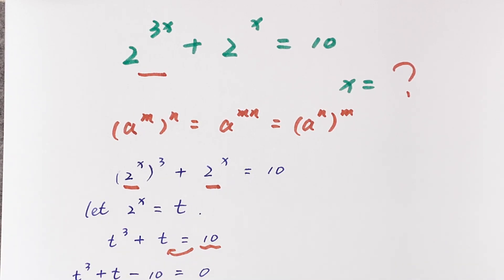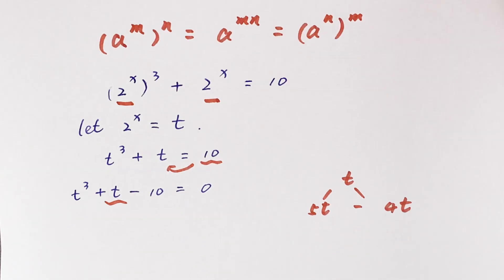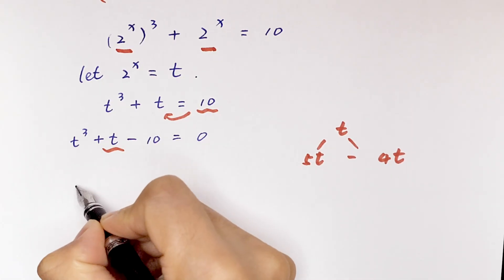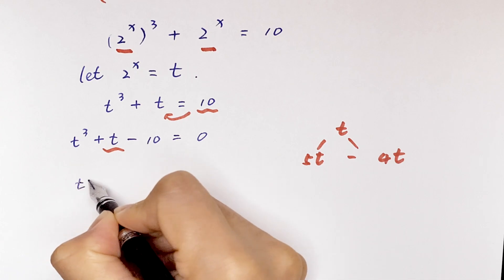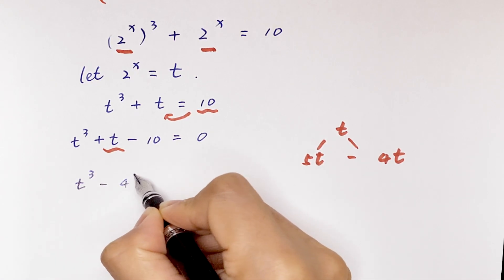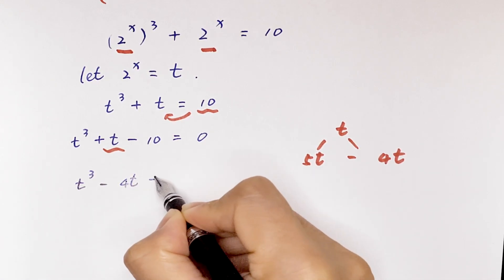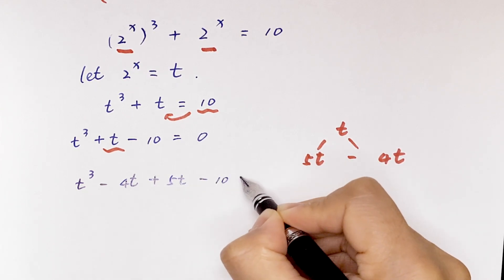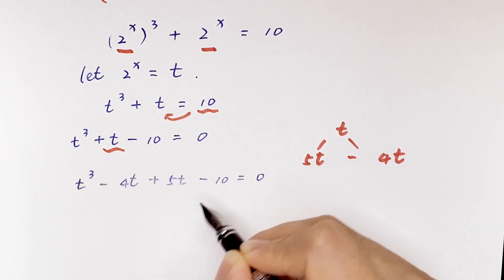We substitute t, splitting the middle term as 5t minus 4t. Our equation becomes t cubed minus 4t plus 5t minus 10 is equal to 0.